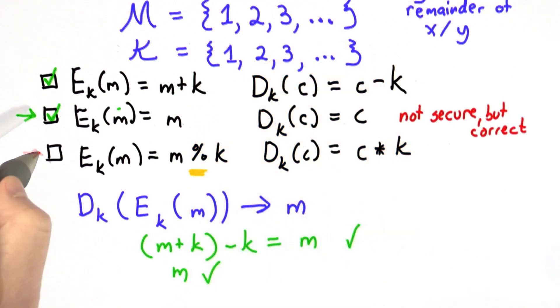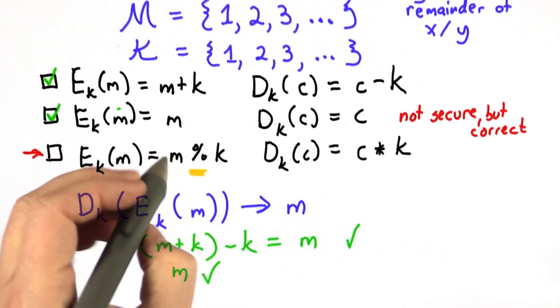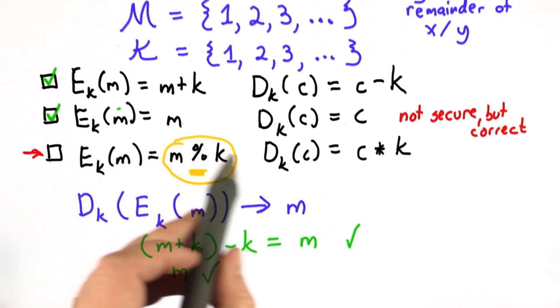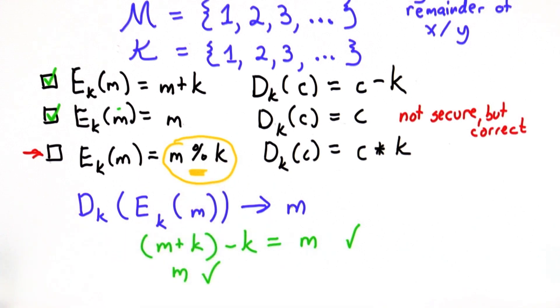The third property doesn't satisfy the correctness property. And the easy way to see that is to observe that the output of this is a smaller set than the number of messages. So for some choices of message and key, this maps to the same value.